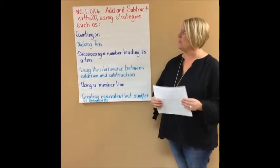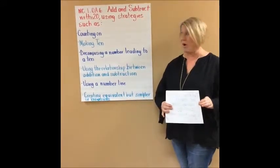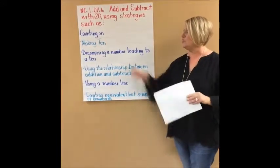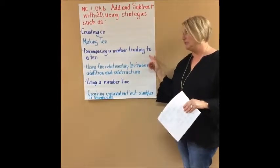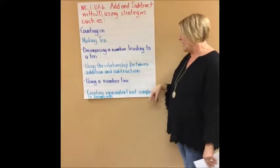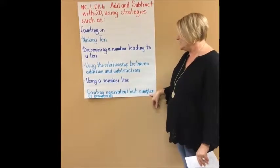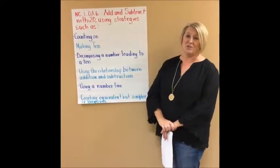Today we're talking about North Carolina Standard 1.OA.6, which is adding and subtracting within 20 using strategies such as counting on, making 10, decomposing a number leading to a 10, using the relationship between addition and subtraction, using a number line, and creating equivalent but simpler or known sums.